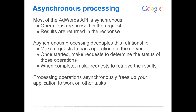Most of the Edwards API that you use today is synchronous. You make the request with your operations and then you get back a response with the result of those operations, so you're waiting for the operations to complete. With asynchronous processing, the difference is that we're decoupling that relationship. You make requests to pass operations to the server, the server processes those operations offline, and then you later check back in to make sure the work is complete and retrieve the results.